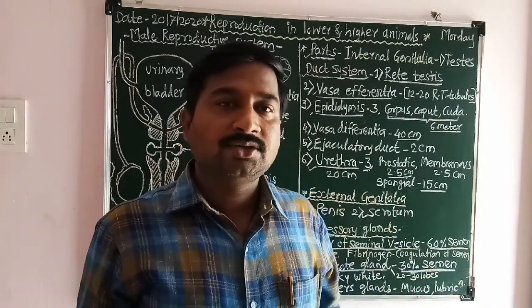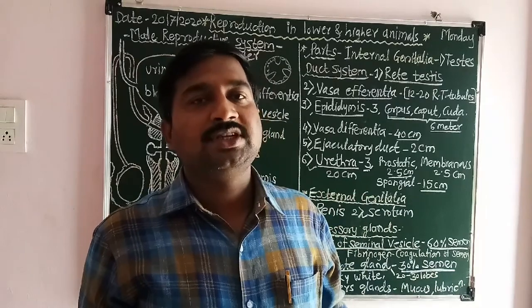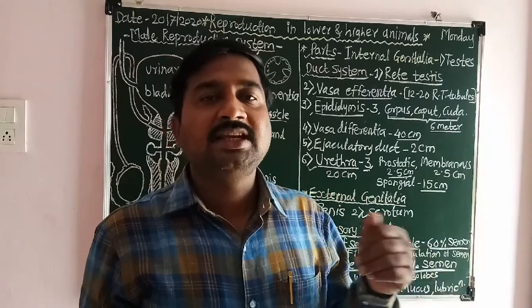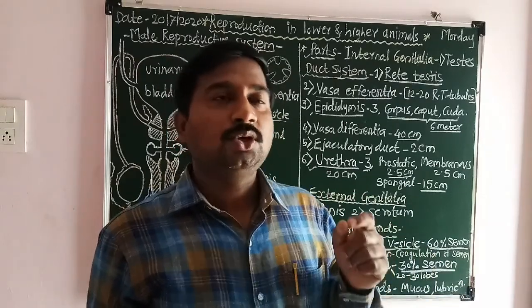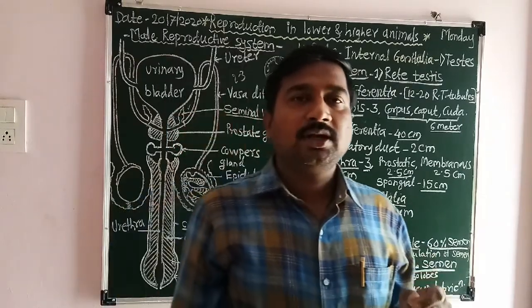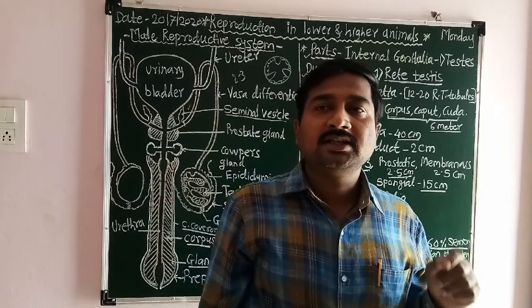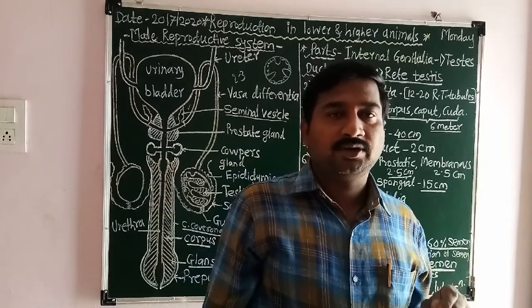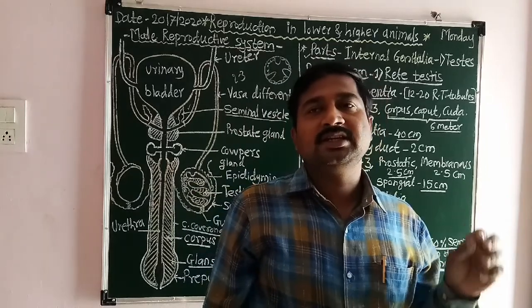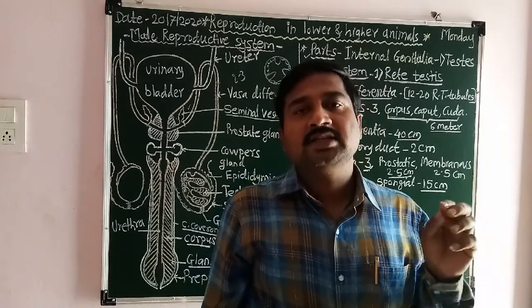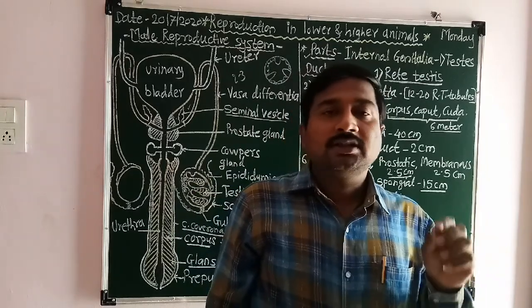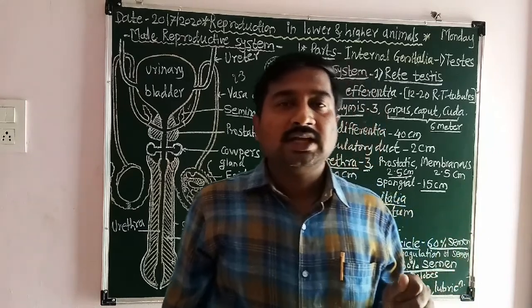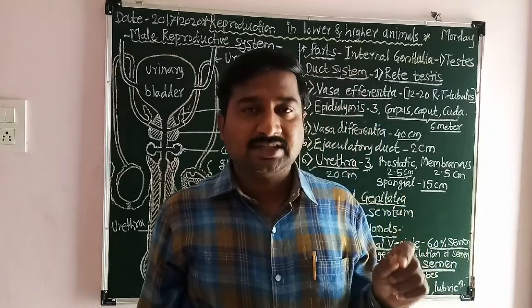These are the parts of the male reproductive system which are present at the internal side of the body. So these are called the internal genital organ or internal sex organ, and they are also called the primary sex organ.